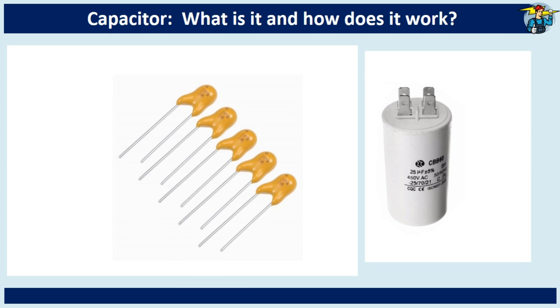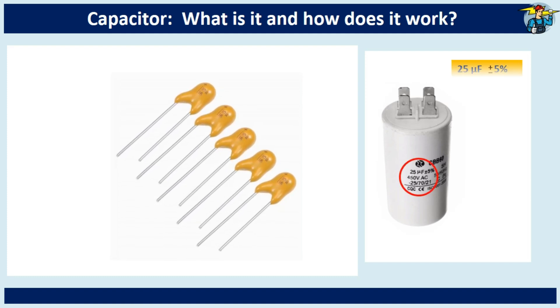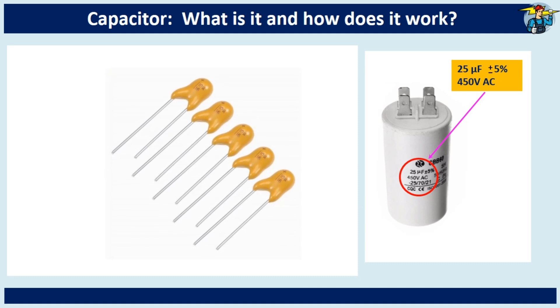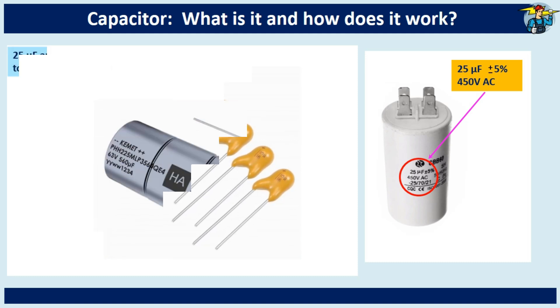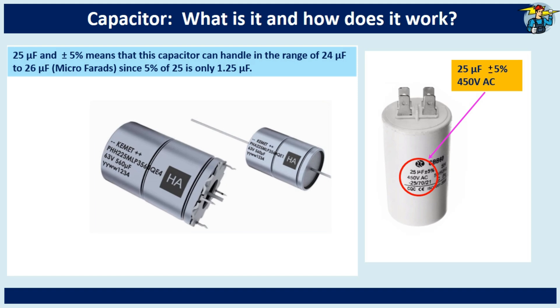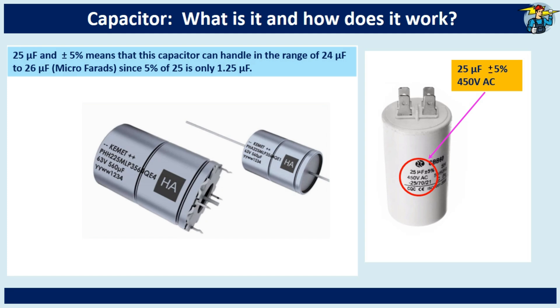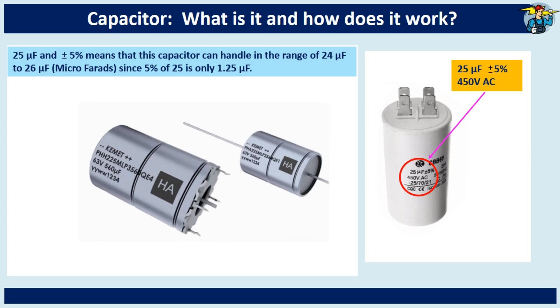On the right side you will see a normal capacitor used in motors, with markings of 25 microfarads plus or minus 5 and 450 volts AC. It means that this capacitor can handle in the range of 24 to 26 microfarads, since 5% of 25 is only 1.25 microfarads.